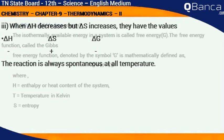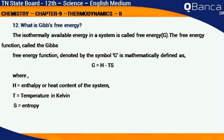What is Gibbs free energy? The isothermally available energy in a system is called free energy. The free energy function, called the Gibbs free energy function, is denoted by the symbol G and is mathematically defined as G equals H minus TS, where H is enthalpy or heat content of the system, T is temperature in Kelvin, and S is entropy.